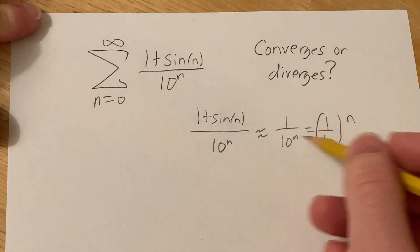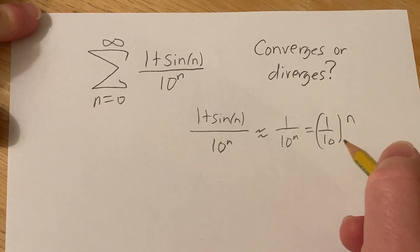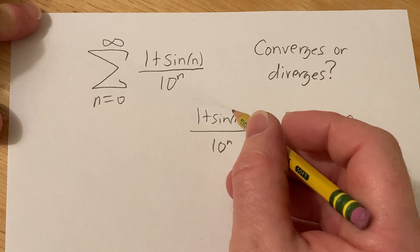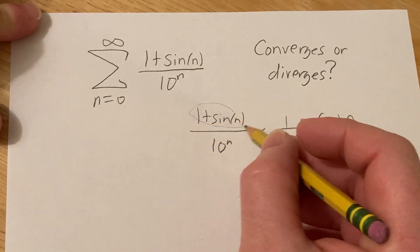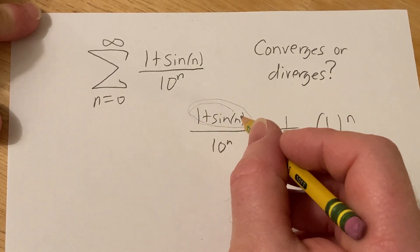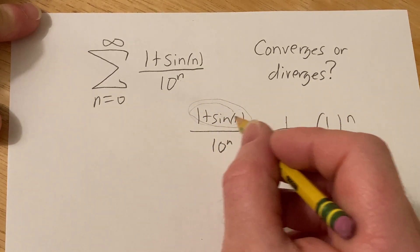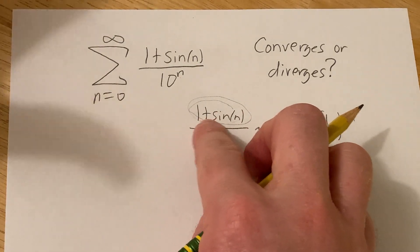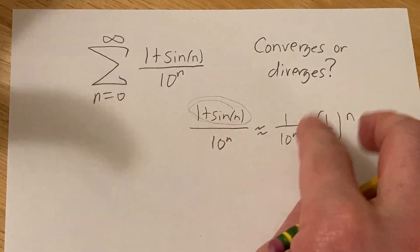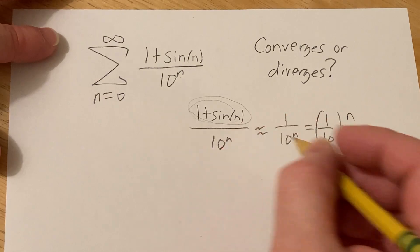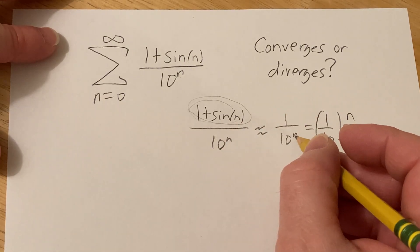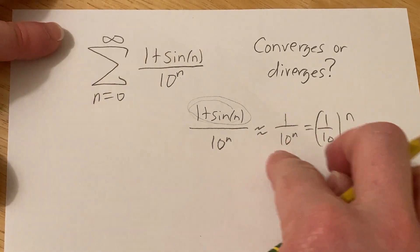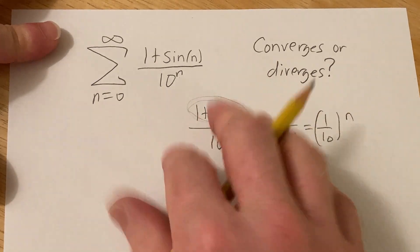If you take the sum of these terms, this is going to be a convergent geometric series. The point is that this is controlled because sine is between negative 1 and 1, so the numerator is between 0 and 2. With the denominator behaving like a geometric series, it should converge. We just have to formally show it.